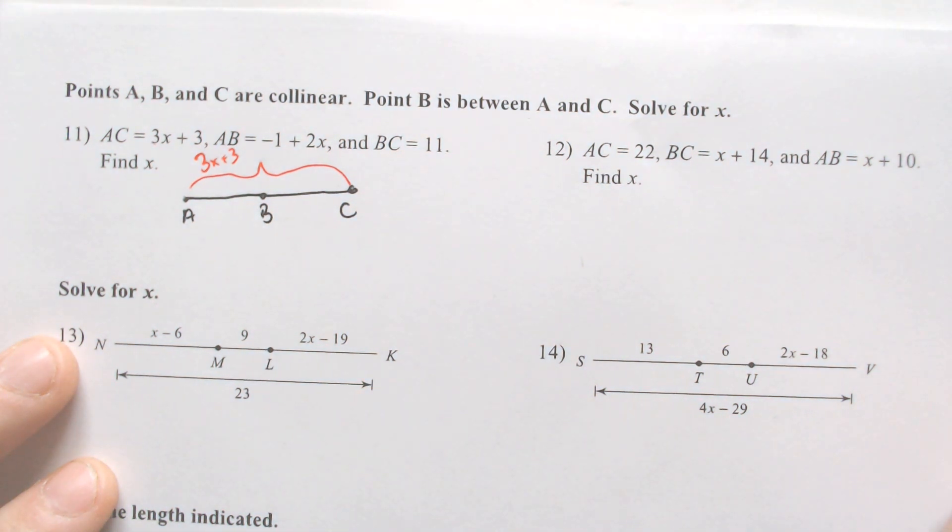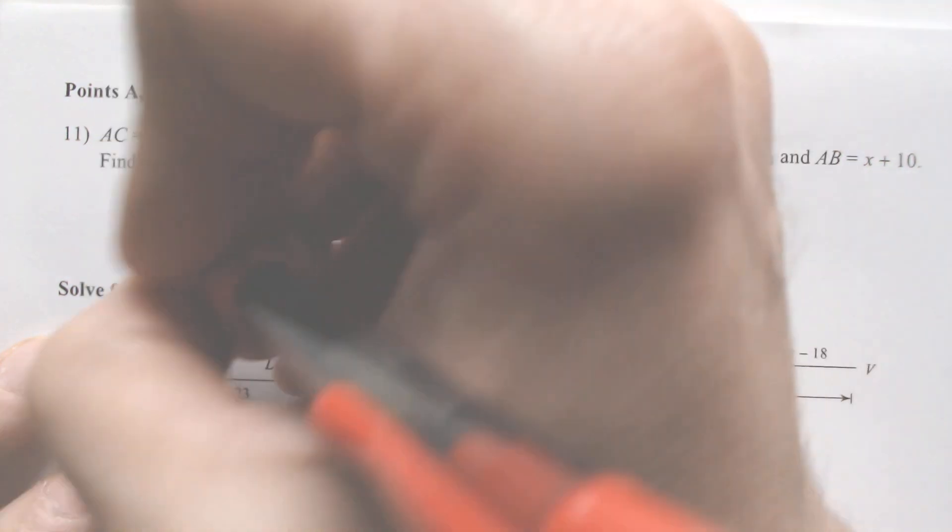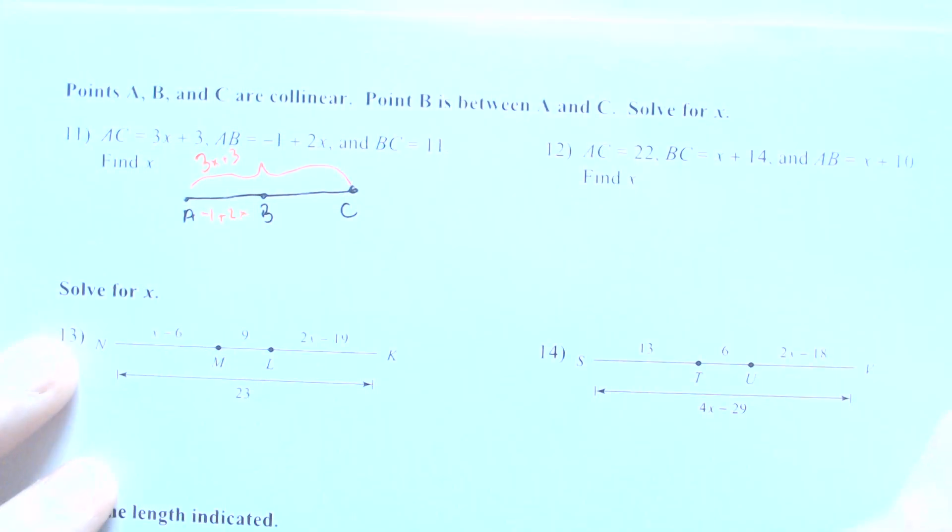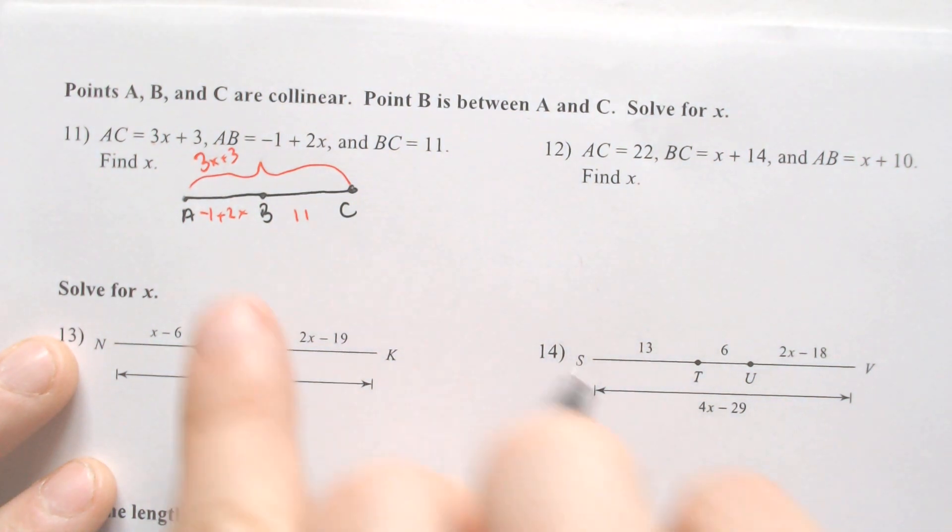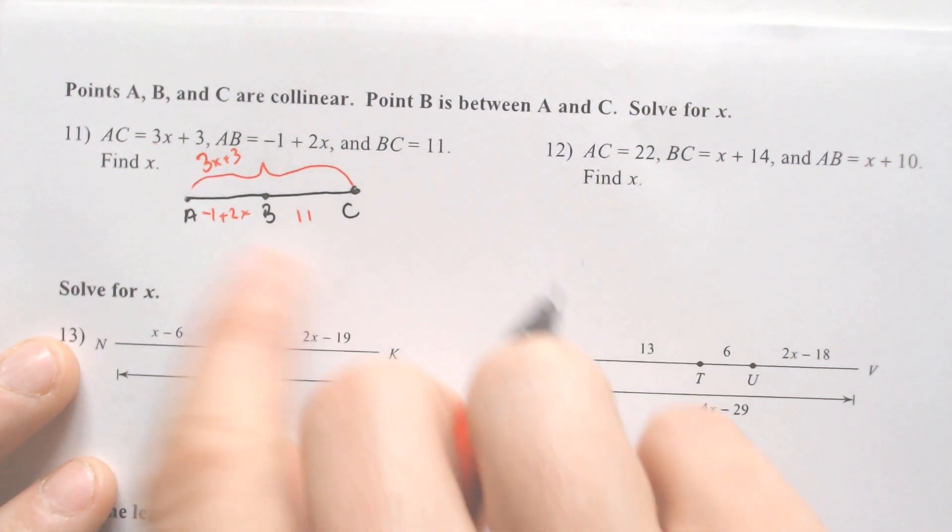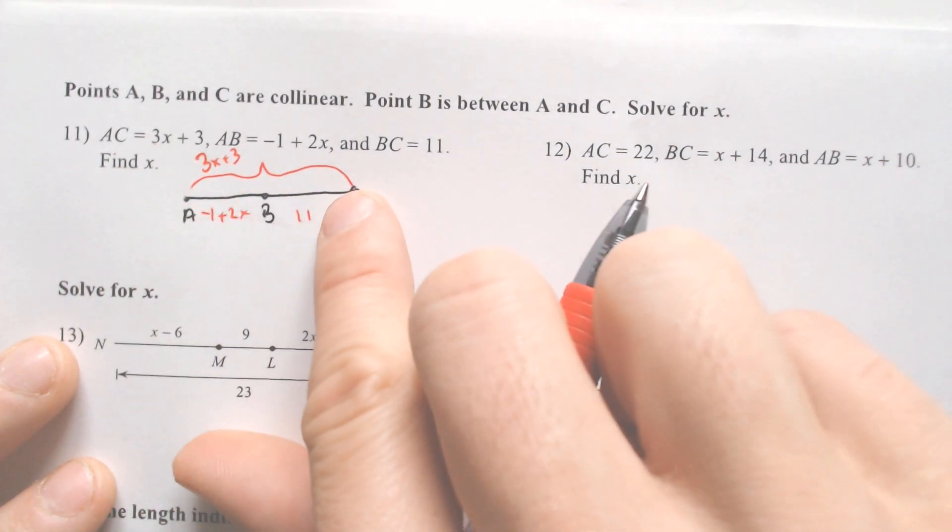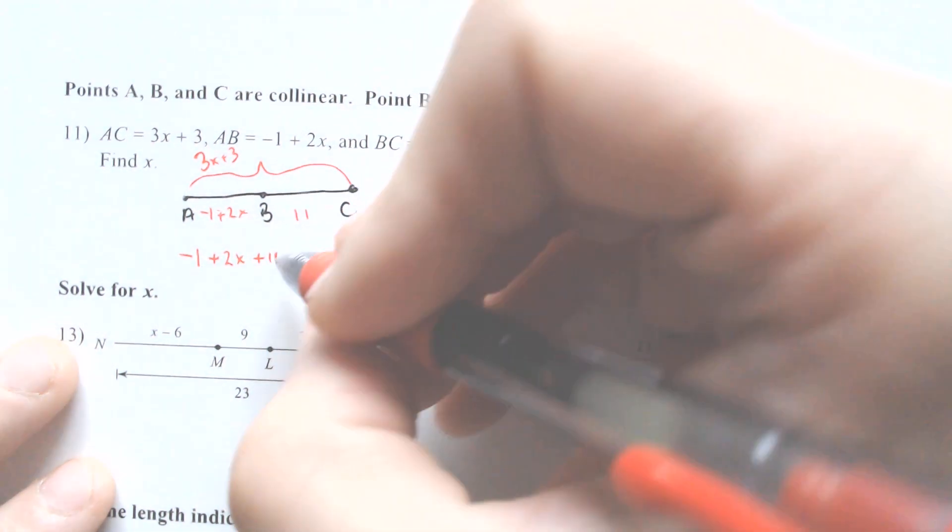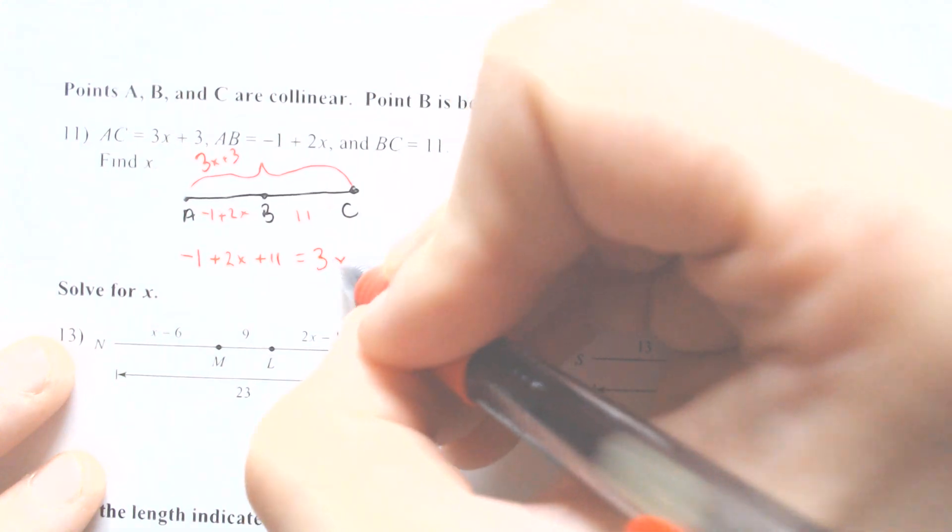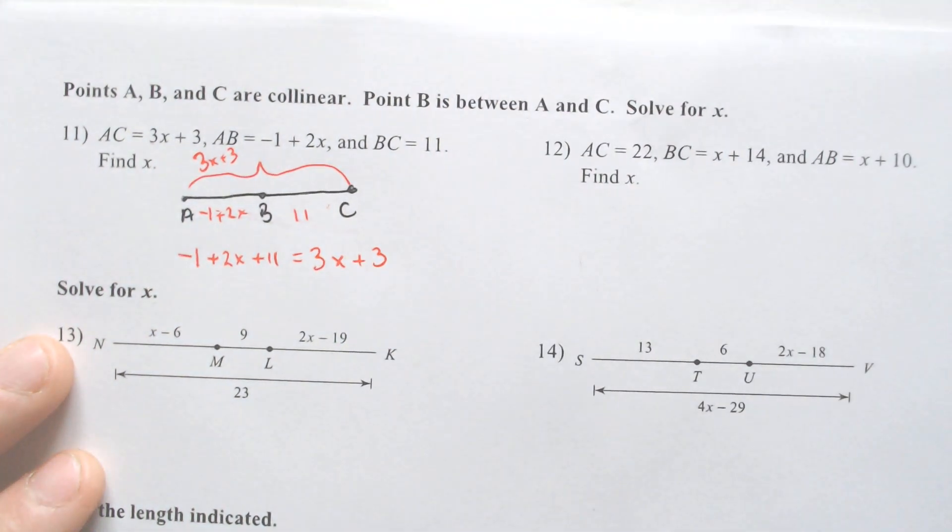We have to fill in the entire way across is 3X plus 3. That's the whole way across. A to B is negative 1 plus 2X, so I'm putting it in between them. And then B to C is 11. We're going to be having to add up the two smaller chunks to equal the whole thing. The whole thing is 3X plus 3. The two smaller chunks are right here.